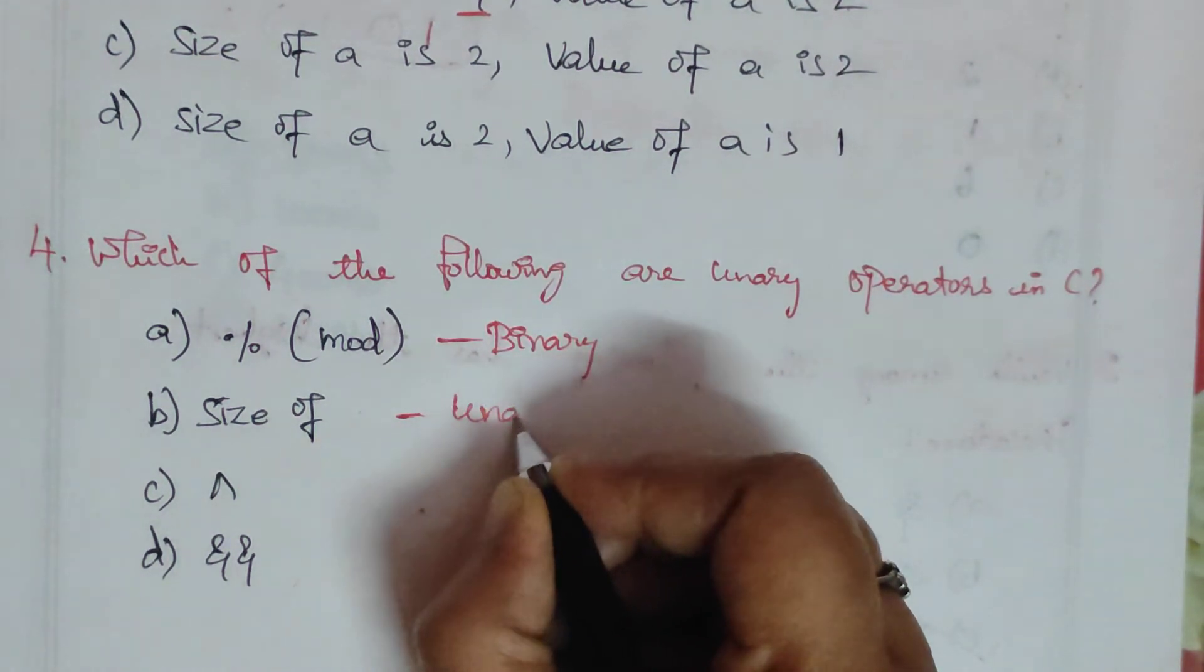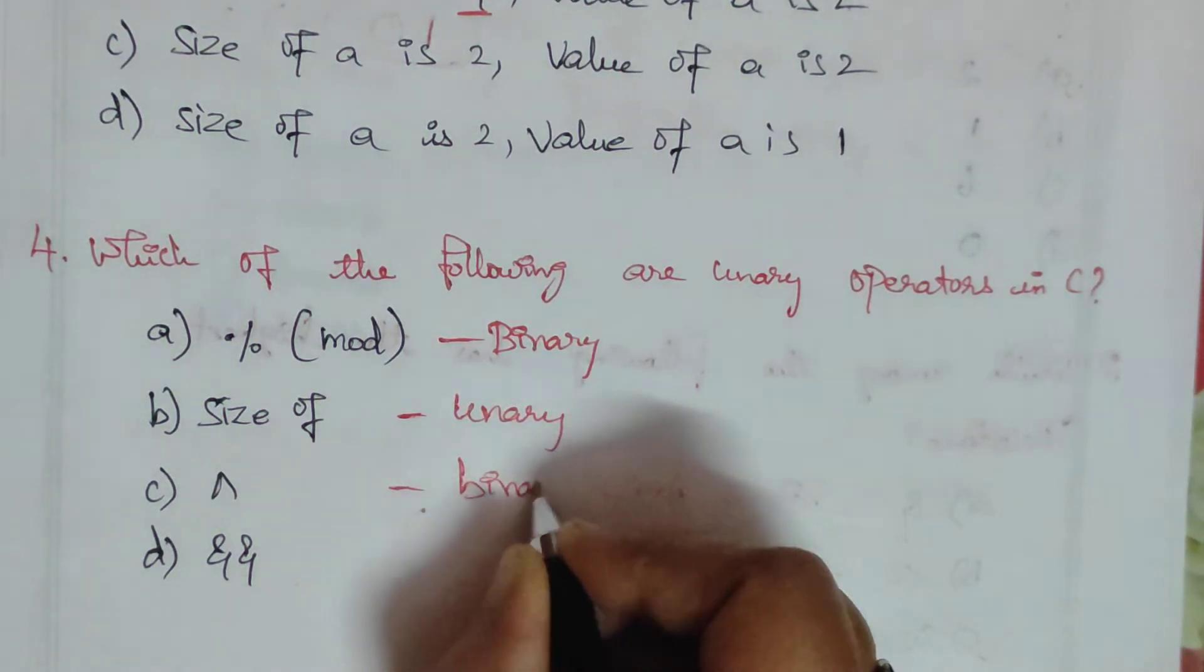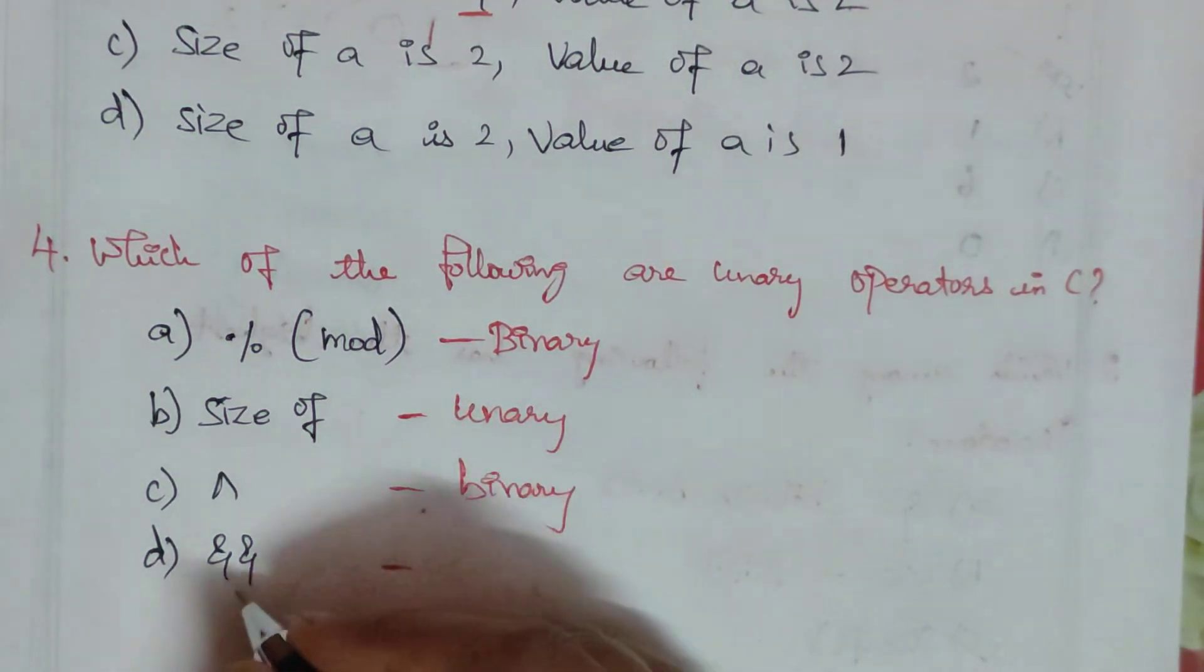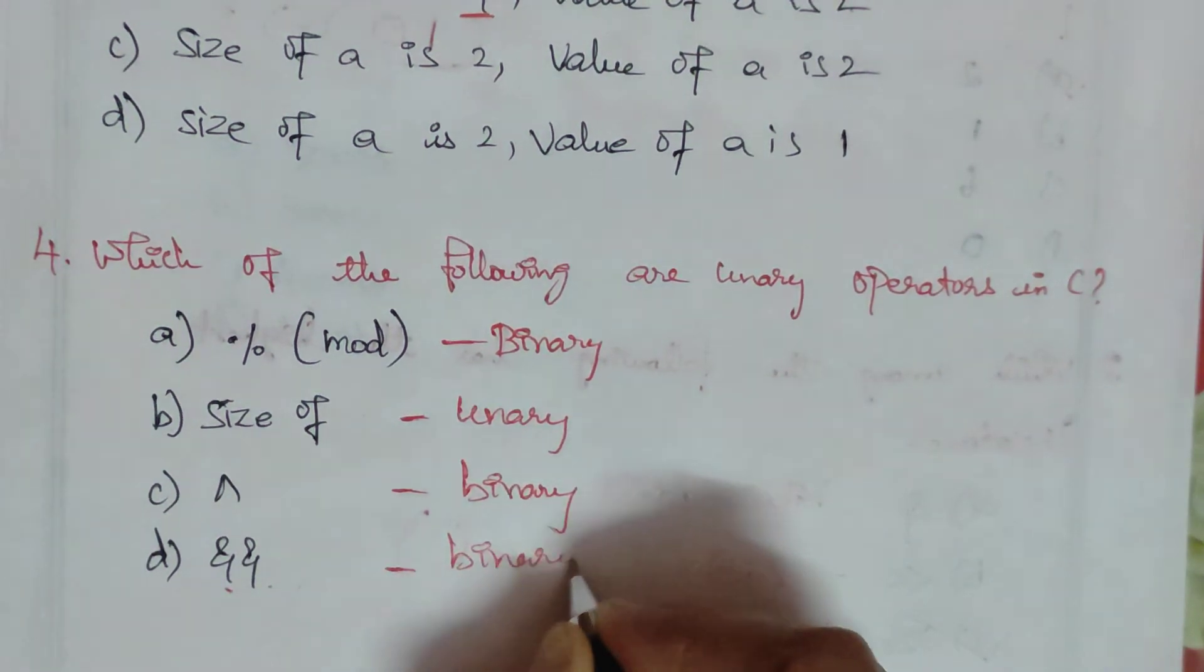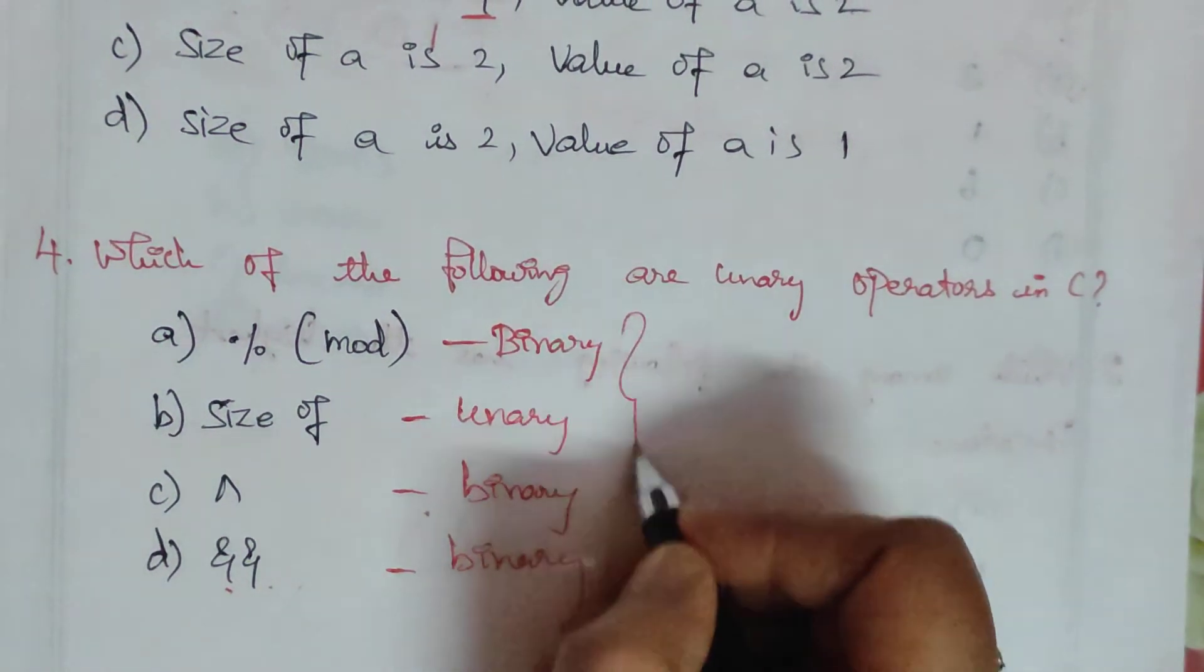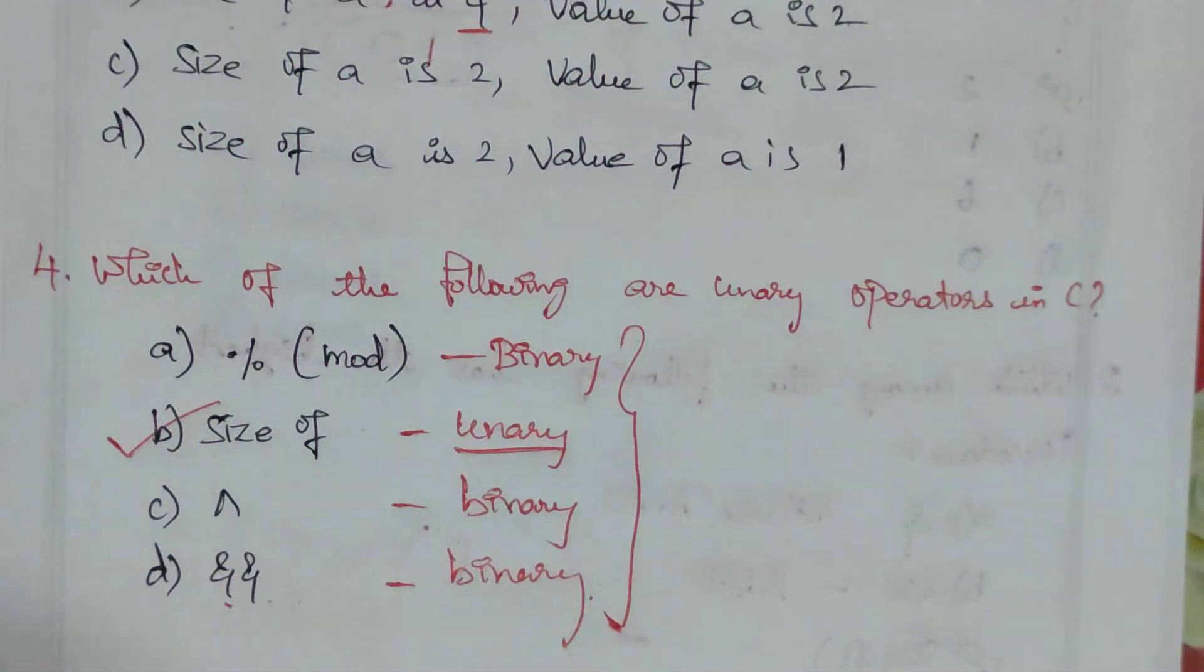Power is also a binary operator. Logical AND is a binary operator. So from the given options, size of is the unary operator. For any doubts in the four questions, please comment below. For more questions, please subscribe to our channel. Thank you for watching.